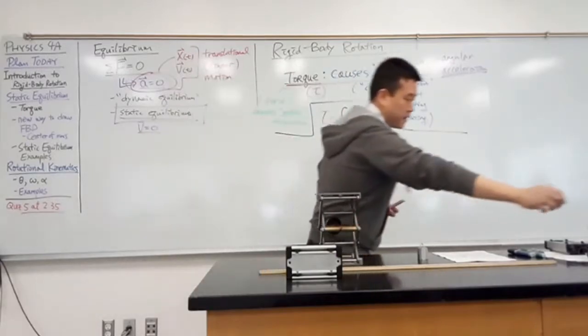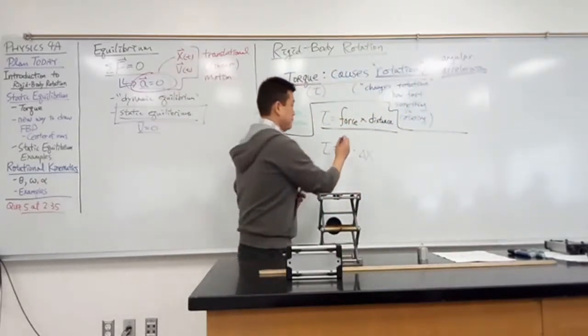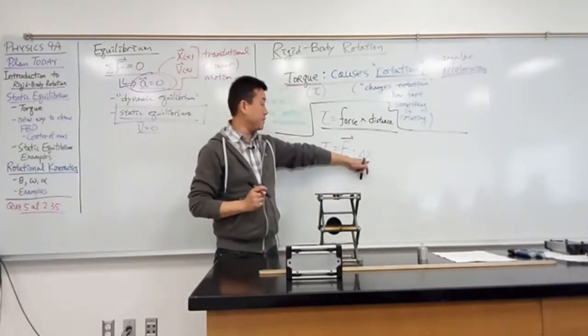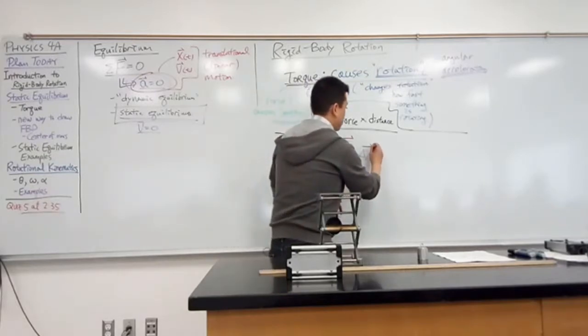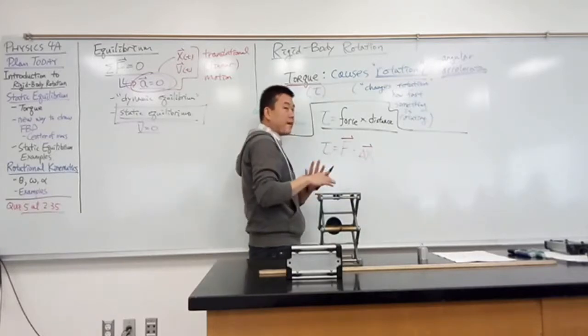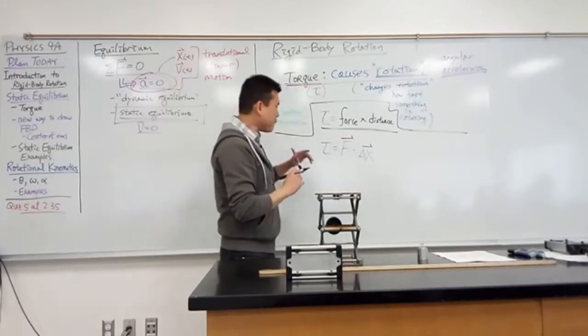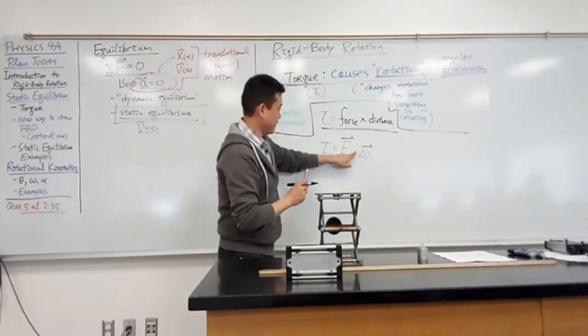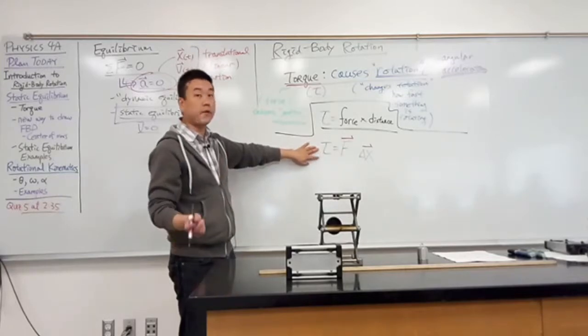So let's say I try to write this down as a formula. Say that torque is equal to force times distance, so some kind of change in position. Wait, that doesn't quite look right. Because I remember that force is a vector, right? And I also remember displacement is a vector. But if I say that, have you seen this before? Yeah, that's work. Work, right?